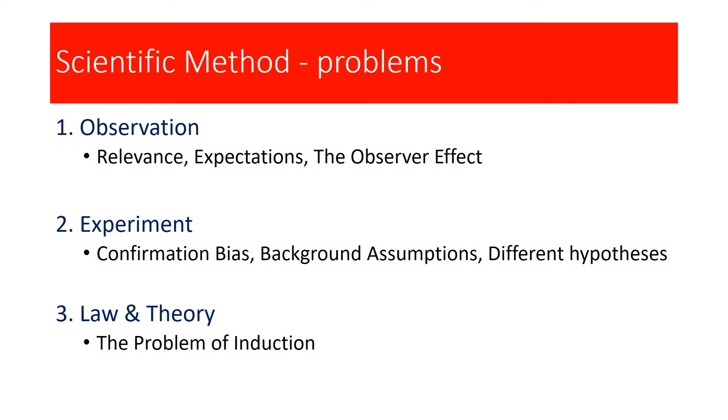First of all, the first stage: observation. The problem of relevance, expectation, and the observer effect is really about the idea that you are never completely neutral in terms of understanding the world. When you look at the world, you're always examining or understanding it given your conceptual schema. Therefore, this in itself introduces bias at the very first stage of the scientific method.